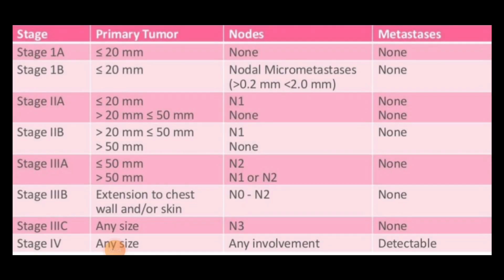Looking at the staging table, breast cancer is classified into mainly four stages: stage 1, 2, 3, and 4. Stages 1, 2, and 3 have been further classified into A and B. Stage 1A means the primary tumor size is less than 20 millimeters — that is less than 2 centimeters, a T1 lesion — and no nodal metastasis and no distant metastasis.